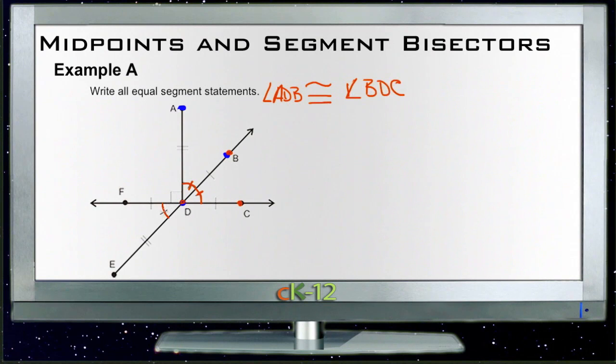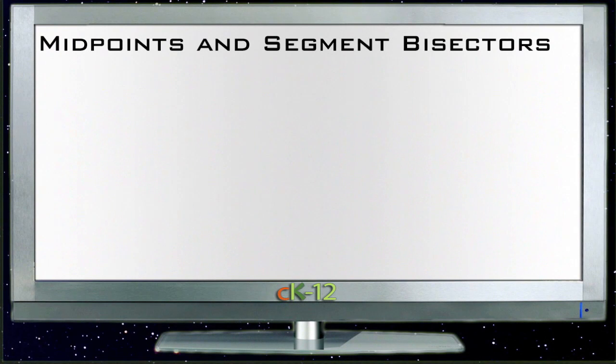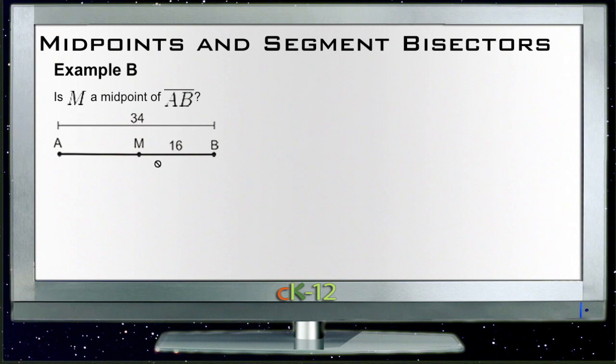And we also have one more angle over here that has a single hash mark, FDE. I'll do that one in green, FDE. So each of those are also congruent to angle FDE. So we have three angles that are equal and all three of them are also identified as congruent.